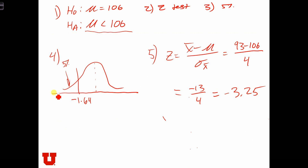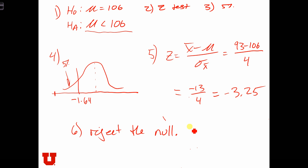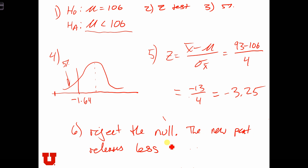That is way out here in the zone of rejection. So step 6: we are going to reject the null. The new peat releases less than 106 grams of CO2 per megajoule.